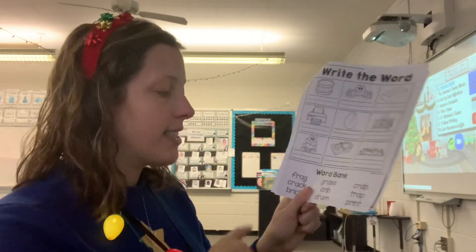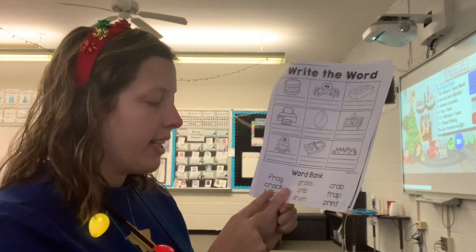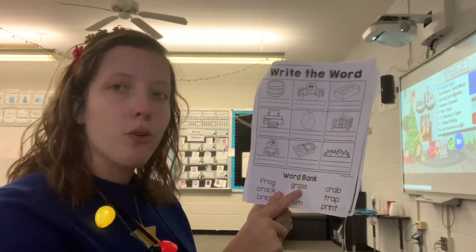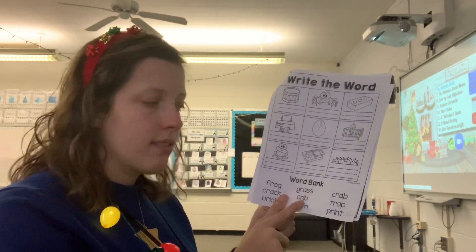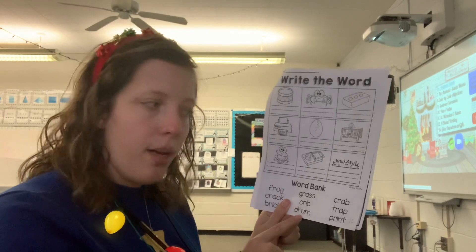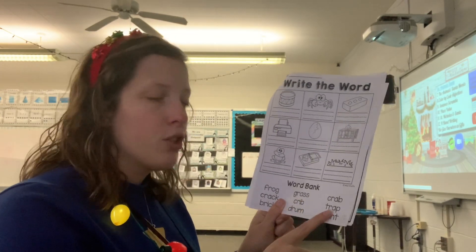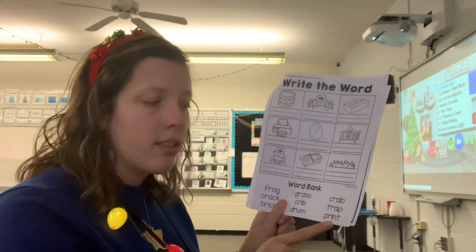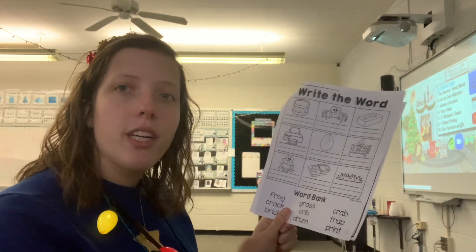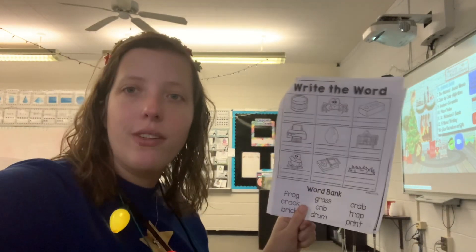Your words at the bottom are frog, crack, brick, grass, crib, drum, crab, trap, and print. You need to match these words at the bottom to the pictures at the top, and that's all you need to do.